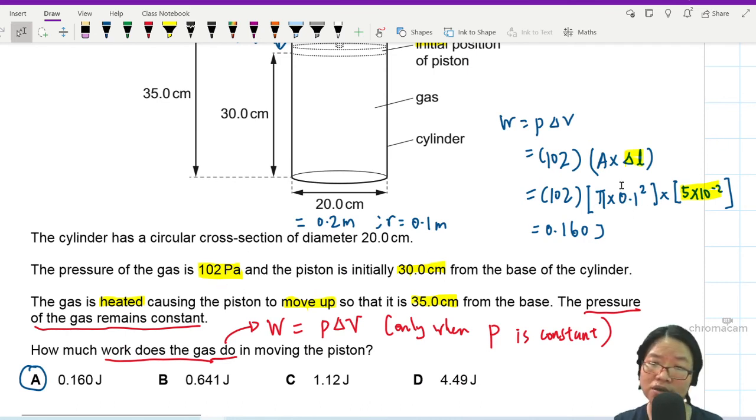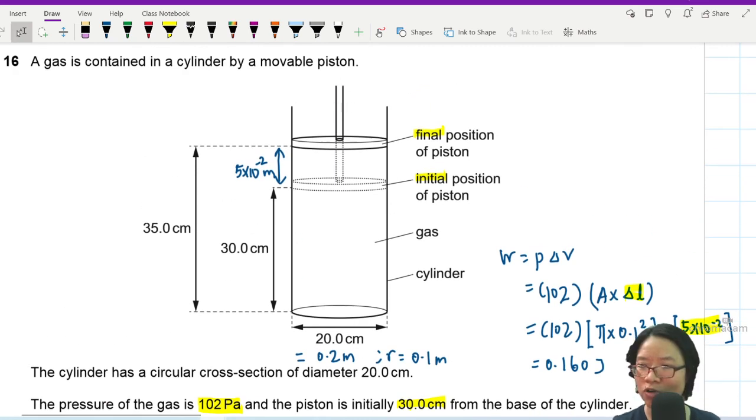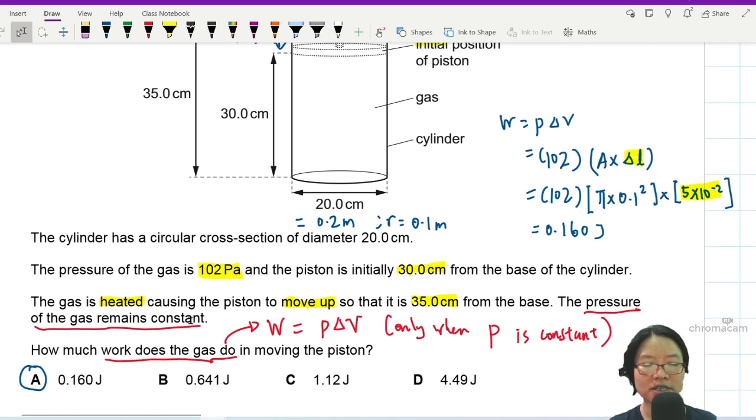So I've converted all the centimeter to meter from the radius, pi R square, to the diameter, sorry, not to the diameter, to the change in length, 5 cm by adding a prefix of negative 2. Right. That's it for the question of heating up the gas and the piston moves upwards. Gas expanding at constant pressure.